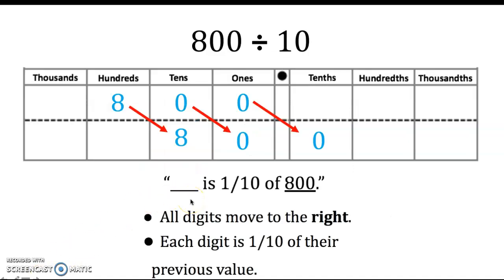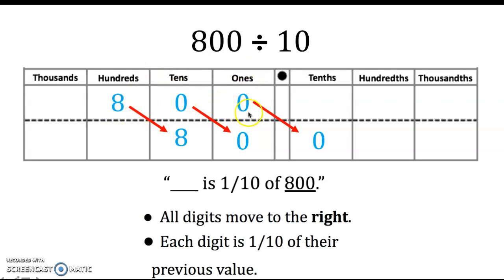Another concept we learned about this week was the idea of one-tenth of. One-tenth of is a synonym for saying a number divided by 10 — they're exactly the same thing. Divided by 10 is the same as one-tenth of. In our example here, we've got 800 divided by 10. Similar to our previous example of multiplying by 10, when we divide by 10 our first step is to place all of the digits in our place value chart. However, there's one distinct difference: when you divide, the digits are moving one place value to the right because their value is decreasing — decreasing exactly one-tenth of their previous value.